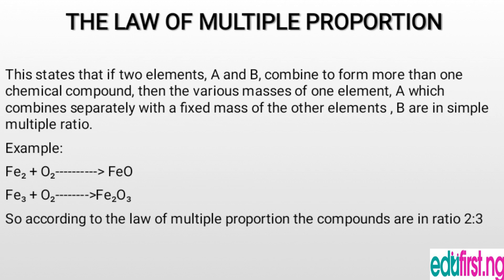The third law is the law of multiple proportions. This states that if two elements A and B combine to form more than one chemical compound, then the various masses of element A which combine separately with a fixed mass of element B are in a simple multiple ratio to one another.